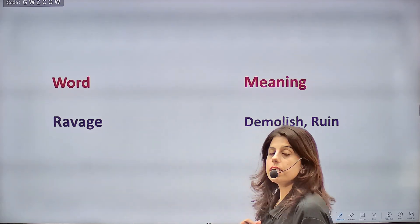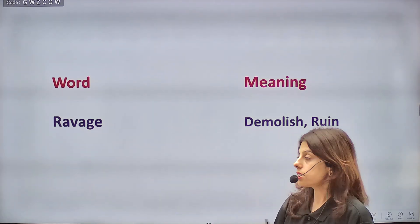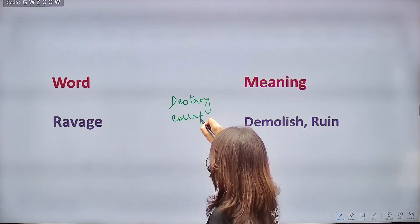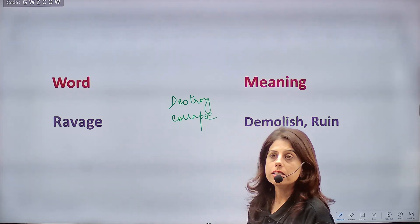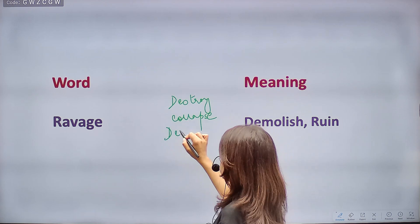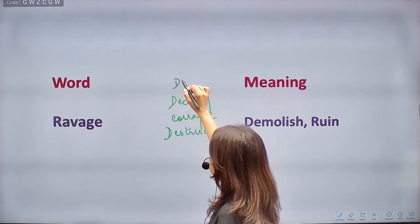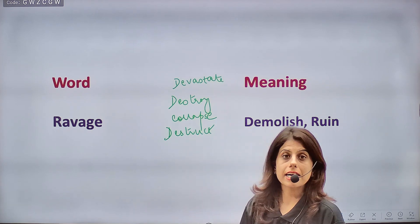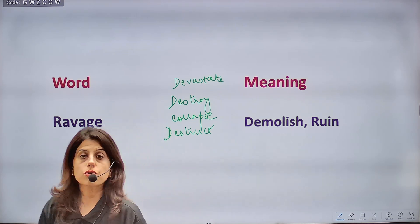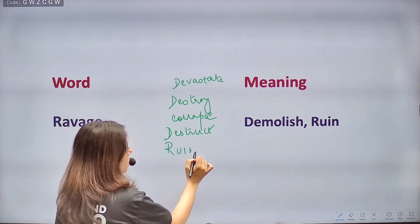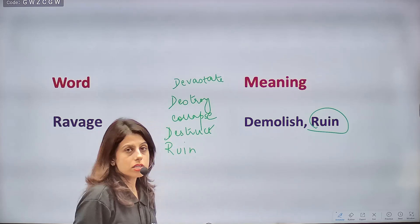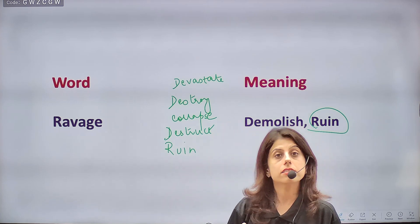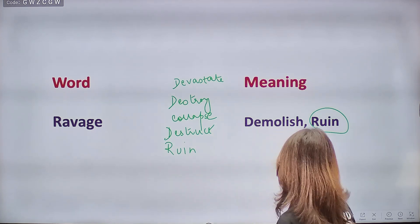Next word is RAVAGE, meaning to demolish or ruin — to completely destroy something. If a building is brought down, collapsed — that is ravage. Synonyms: demolish, ruin, destruct, devastate (a very good word). Antonyms: construct, fabricate, assemble, produce, build — when you are making something rather than destroying.